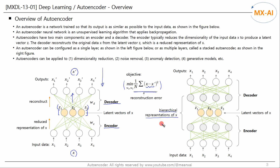The concept of autoencoder was first introduced in the 1980s. Early works on autoencoders were used for dimensionality reduction or feature learning. Since then, many types of autoencoder have been proposed by different researchers and successfully applied in many fields, such as generative models, computer vision, speech recognition, and natural language processing. Autoencoders can be applied to dimensionality reduction, noise removal, anomaly detection, generative models, and more.